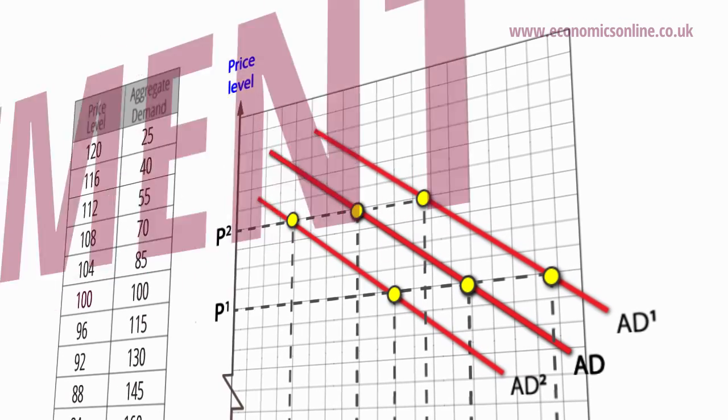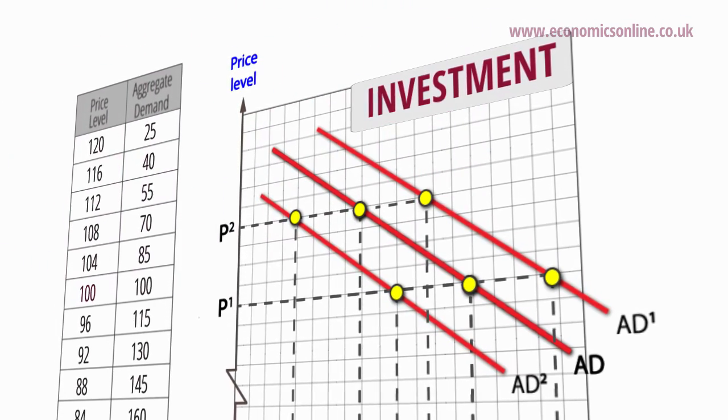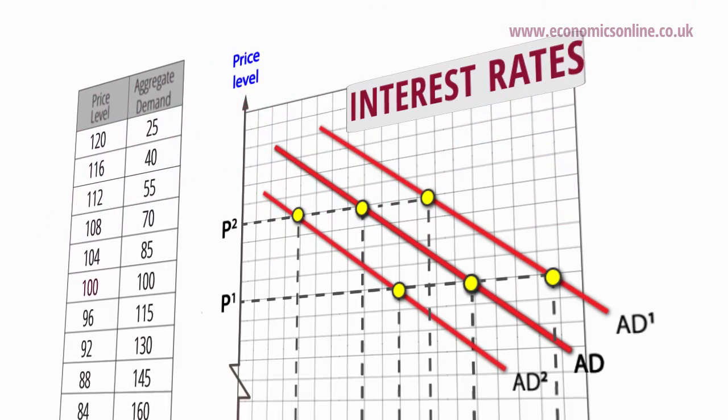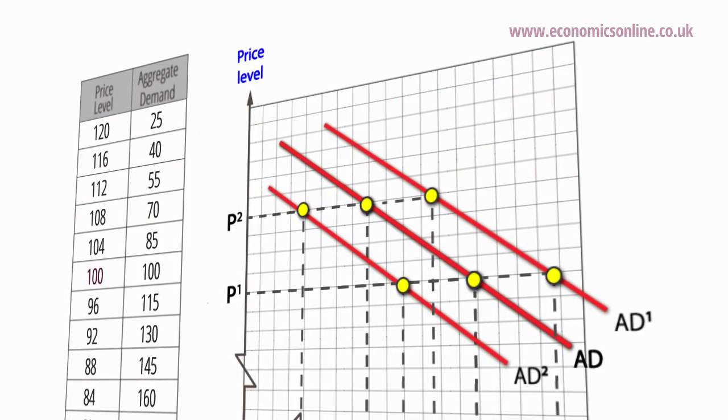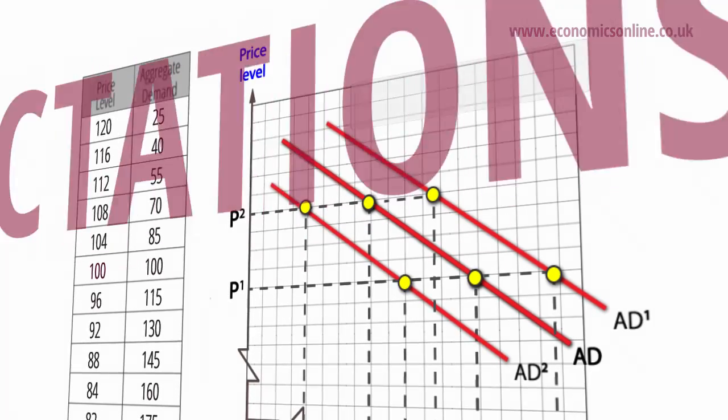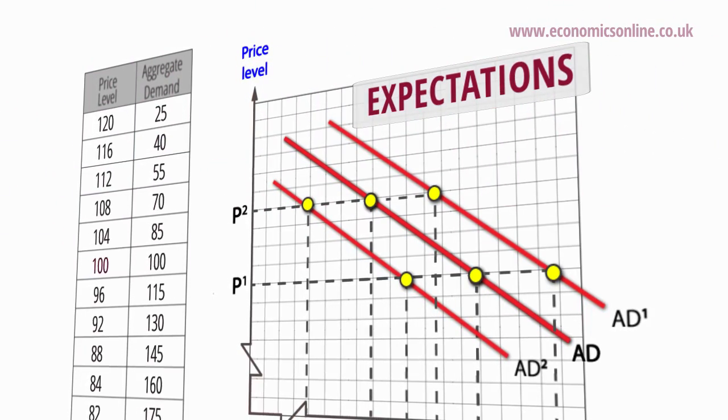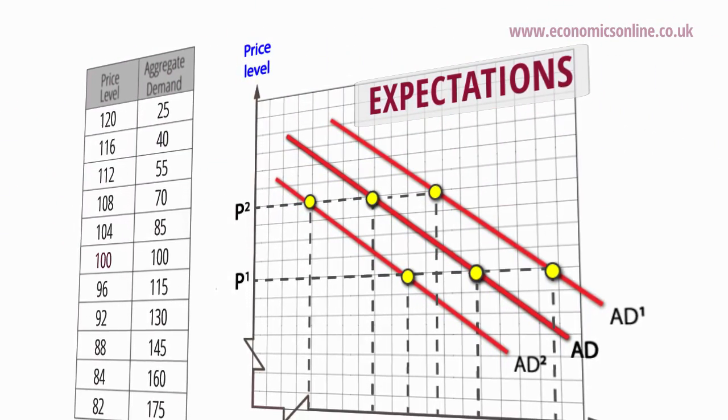Shifts from changes in investment can also arise from changes in the money supply, which affect interest rates and business decisions. Shifts also arise from changes in business confidence and expectations. A dip in business confidence will shift the AD curve to the left.